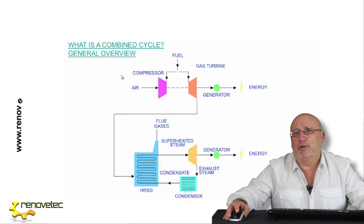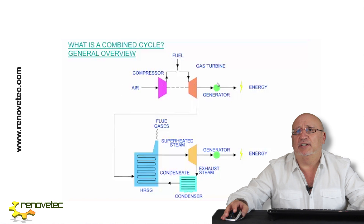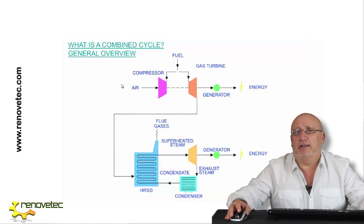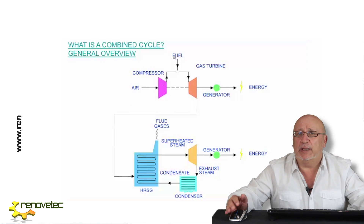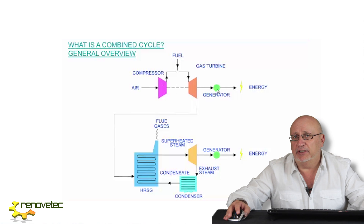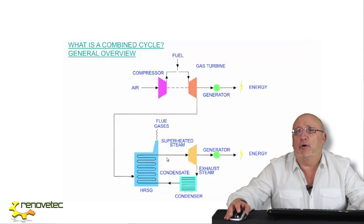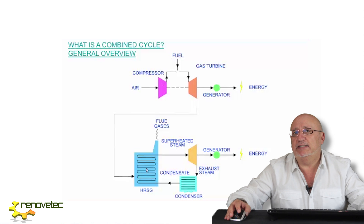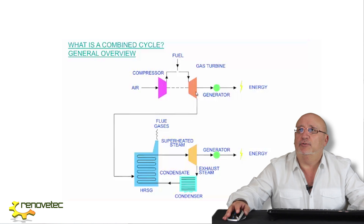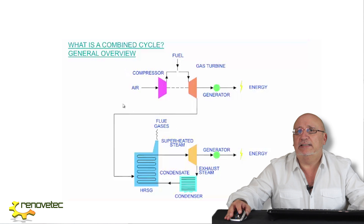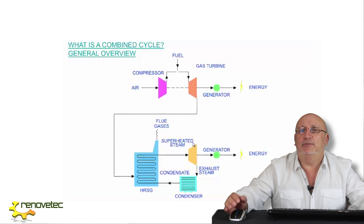What is a Combined Cycle? A Combined Cycle is a power plant that generates electricity combining two cycles. One cycle is related to a gas turbine connected with a generator, and a steam turbine that obtains the heat to convert water into steam from the exhaust of the gas turbine. Connecting one gas turbine to a steam turbine, we obtain a very good efficiency.